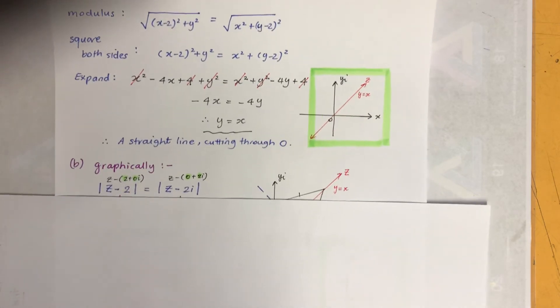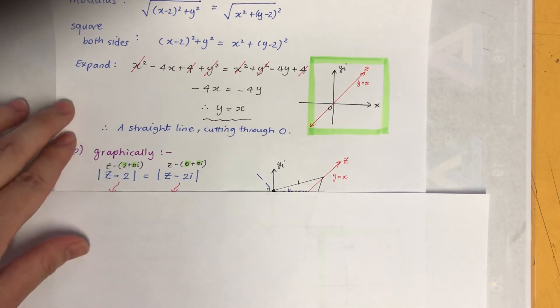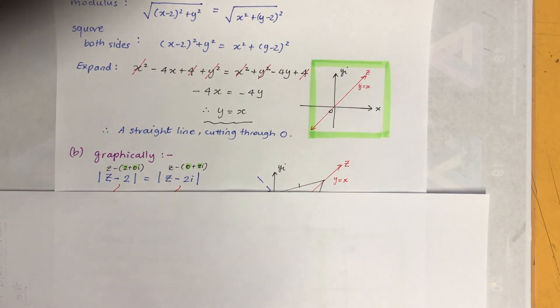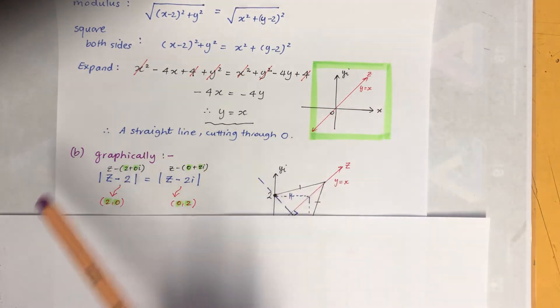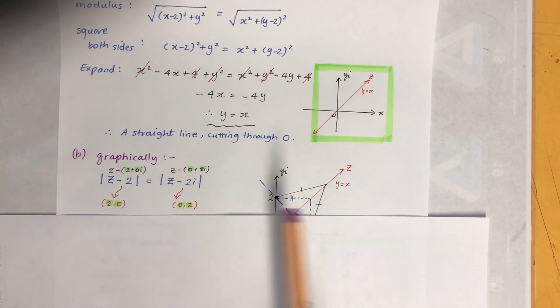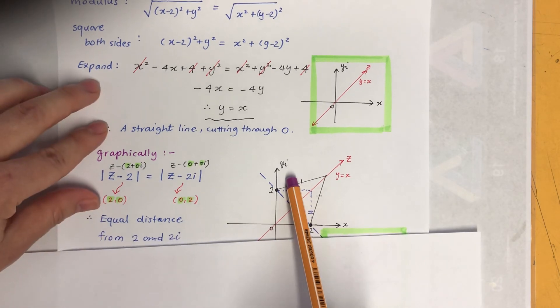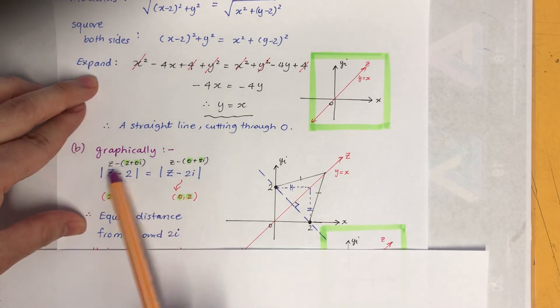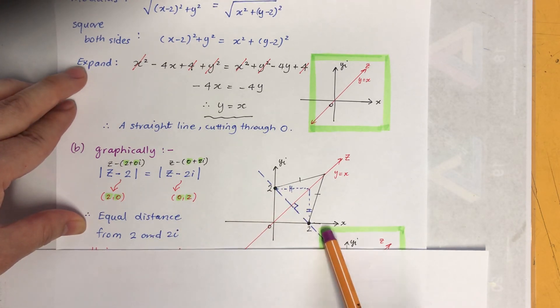On the side here, something like this. And graphically, so as you can see, Z minus 2 is really Z minus 2 plus 0 imaginary. There's no imaginary number in this one. And here, no real numbers. So what does that really mean? The point indicating the center or the point is 2,0 and 0,2. So if I sketch that, and also you can tell that they're equal distance.